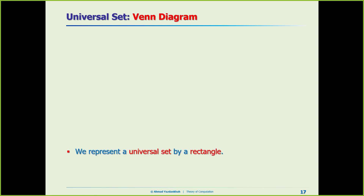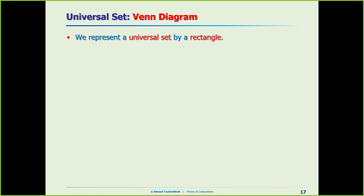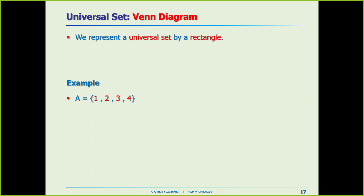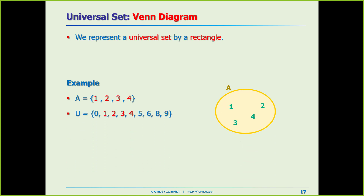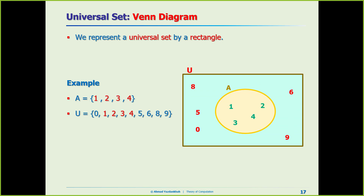How can we represent the universal set with a Venn diagram? We usually use a rectangle. If this is the universal set, we show it by a rectangle like this.